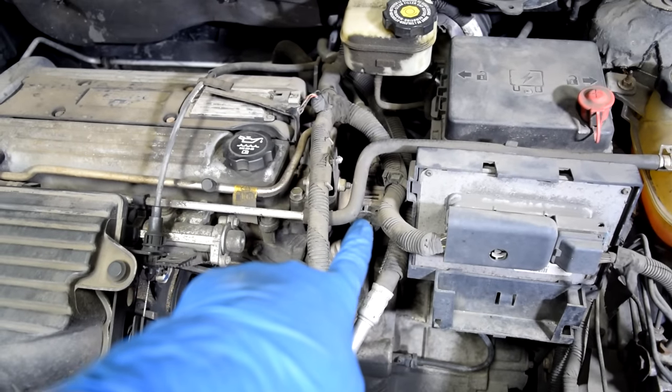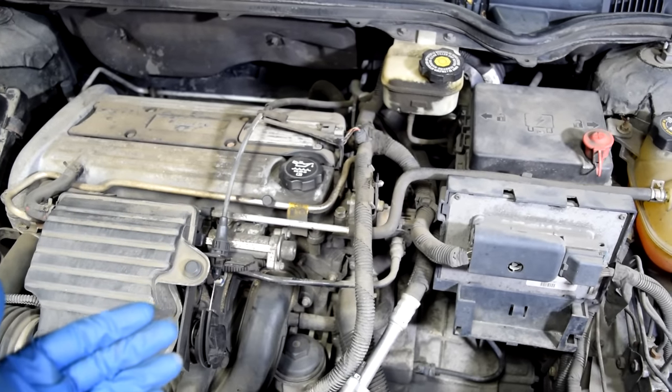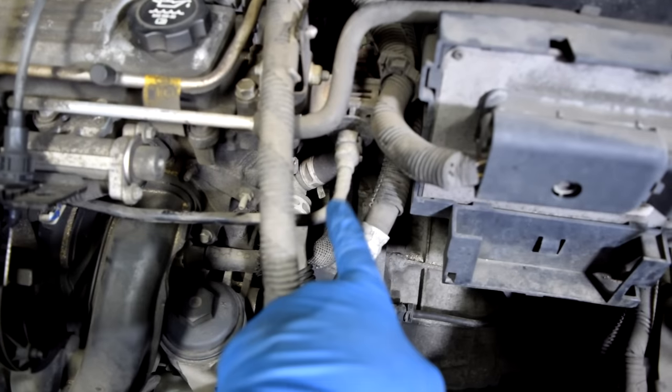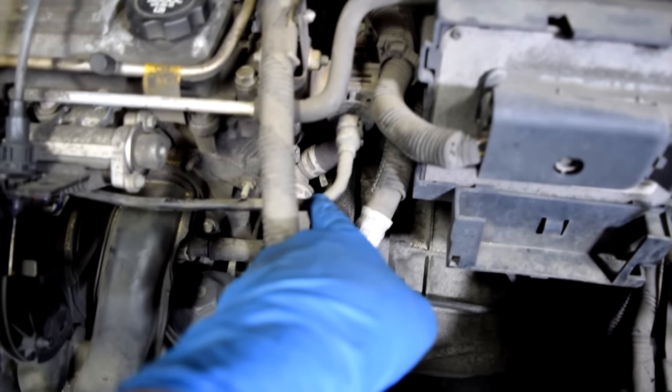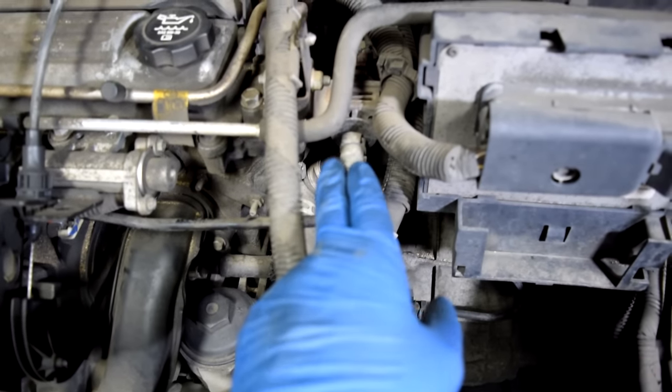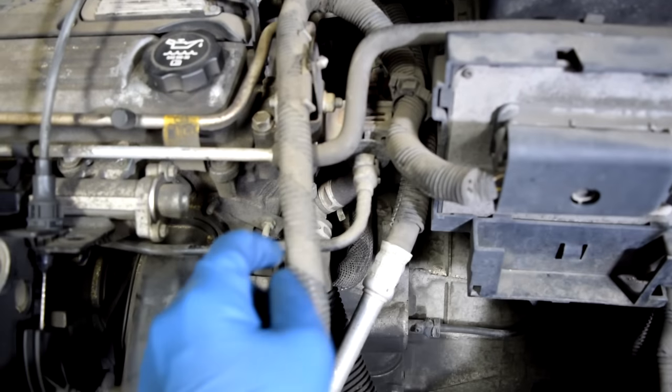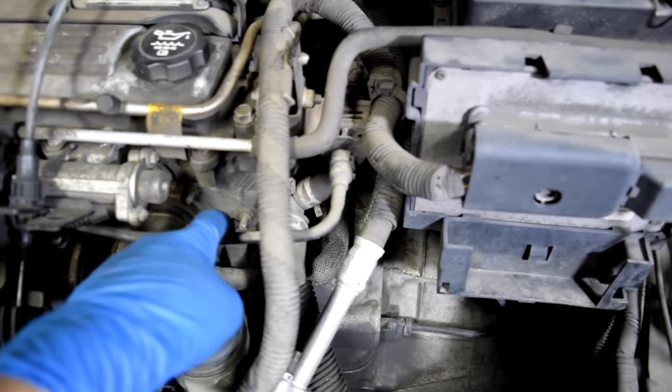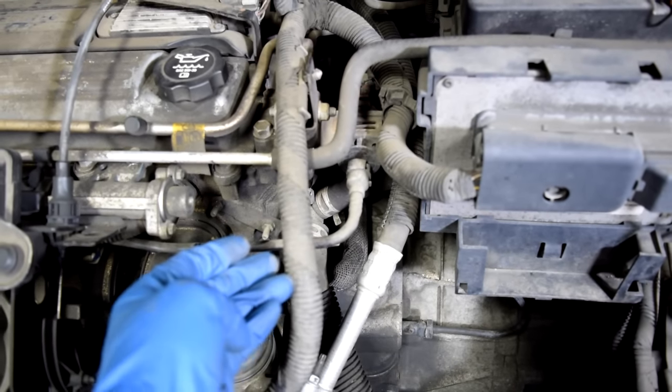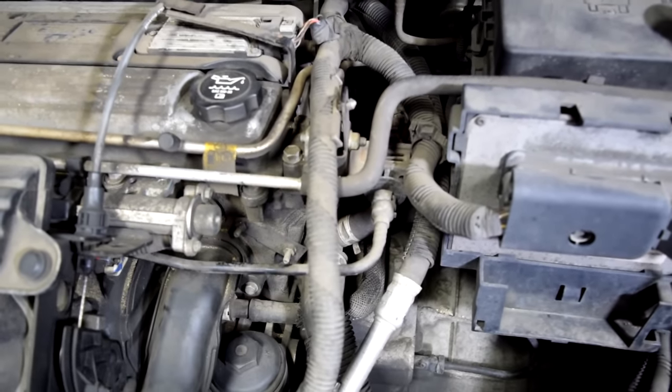Also, if your purge solenoid is stuck open, it basically means you're going to have a vacuum leak. Your engine is going to suck in unmetered air, and that's also going to cause your engine to run rough. Also, this line that comes after your purge solenoid, if it gets cracked, it's going to be a vacuum leak as well, even if your purge solenoid works properly, because when it's closed, your engine is going to suck in air, unmetered air, through this line after your purge solenoid, and that's going to cause your engine to run rough, so it's something you want to check and keep in mind as well.